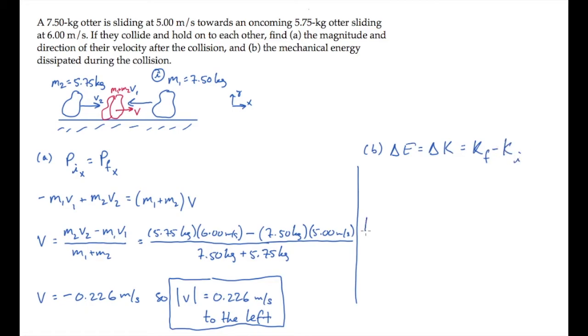So it's K final minus K initial. The final kinetic energy is one half the final mass times the final speed squared. When you substitute numbers and calculate, you find that equals 0.338 joules.